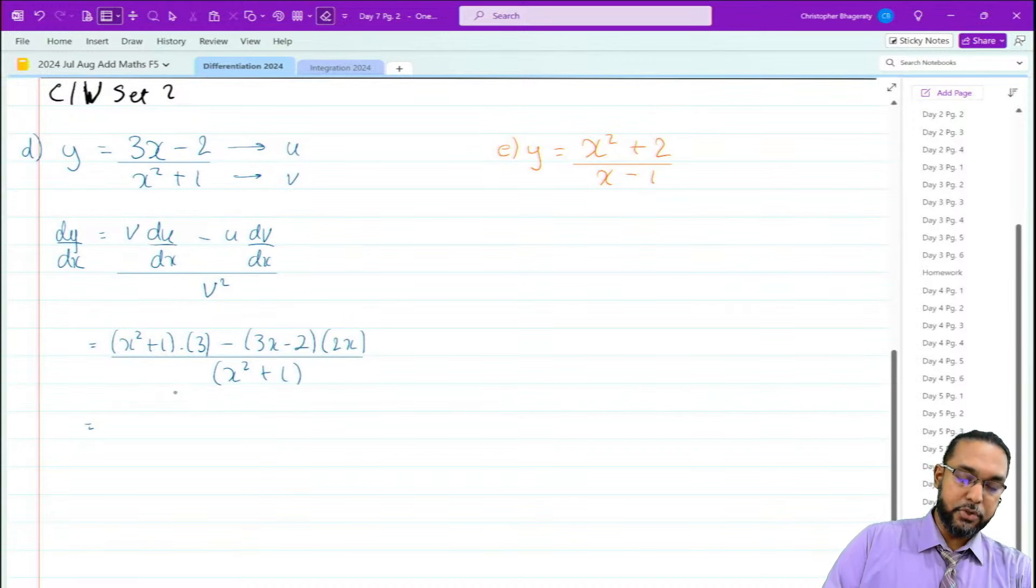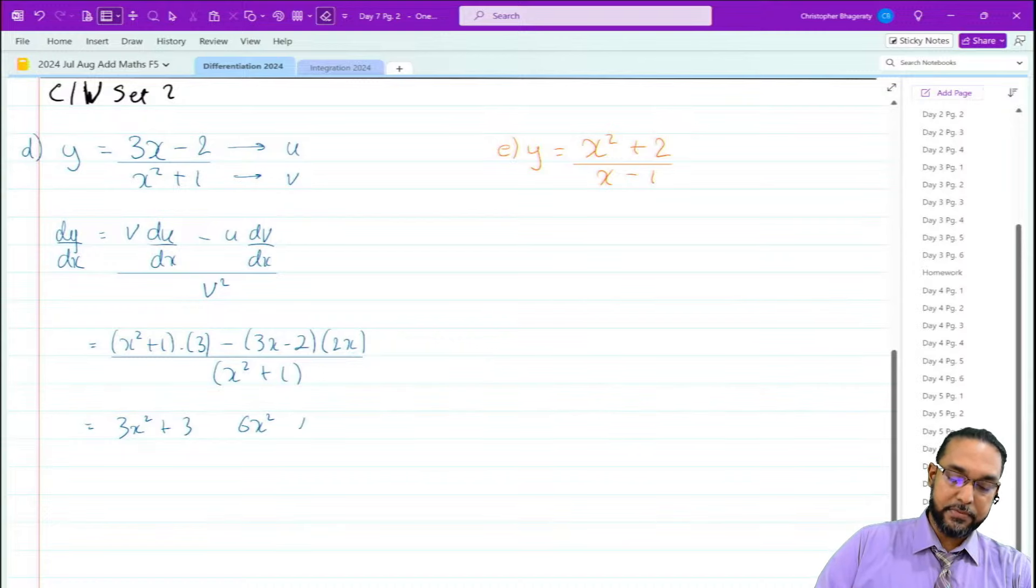Expanding the numerator: 3 times x² gives 3x², 3 times 1 is 3. 2x times 3x is 6x², and 2x times 2 gives 4x. With the minus sign in front, it changes the sign of everything in the bracket, so it's -6x² + 4x.